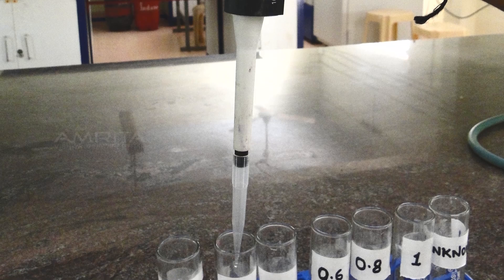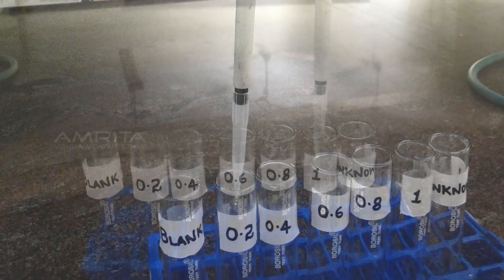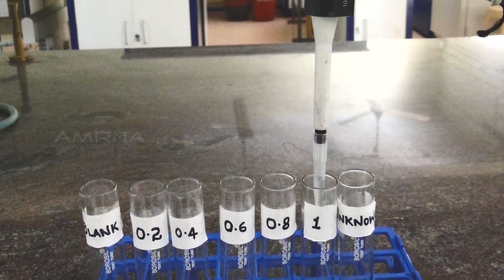Procedure: Pipette out different volumes, i.e. 0.2 ml to 1 ml, of standard amino acid solution to the respective labeled test tubes.